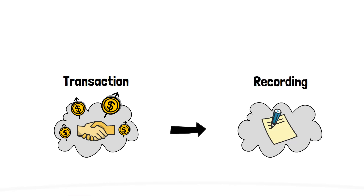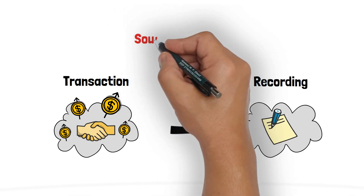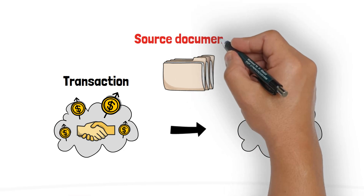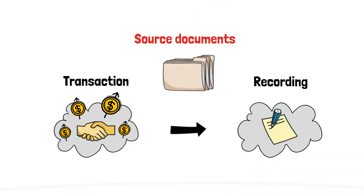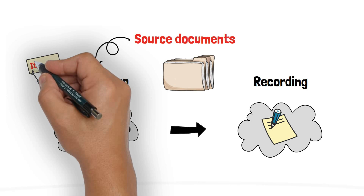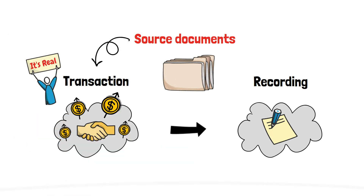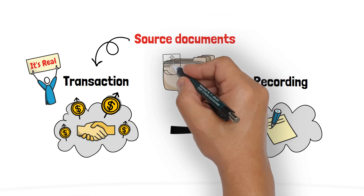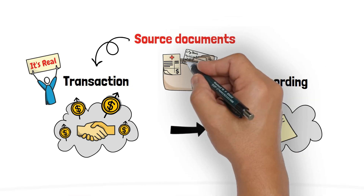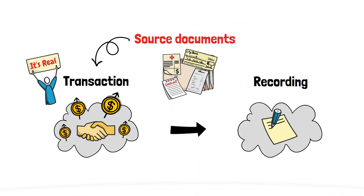Before recording any transaction, the accountant should first ensure that the source documents for the transaction exist. Source documents provide evidence that the recorded transaction actually occurred. These documents can include, for example, purchase invoices, bank checks, contracts, and sales invoices.